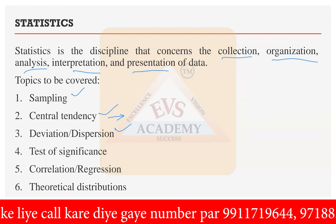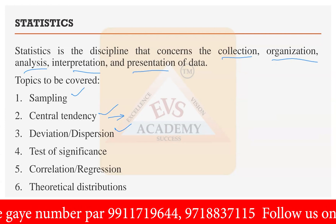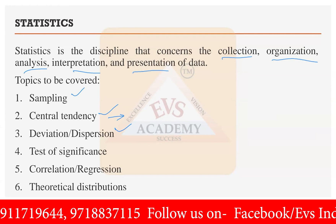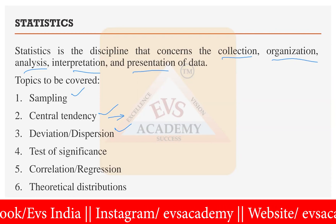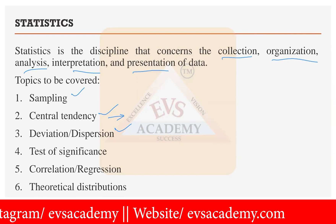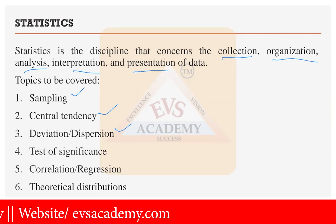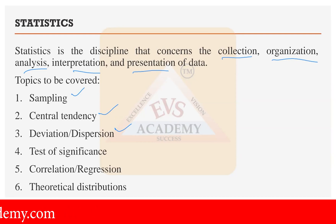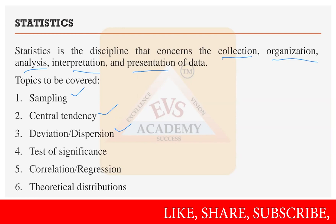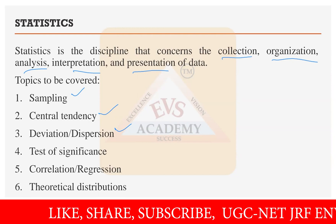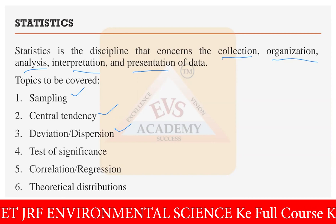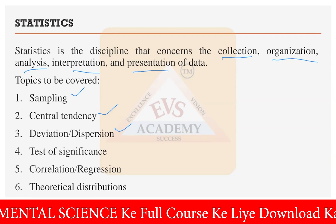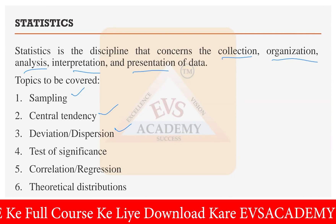Then similarly we have deviation and dispersion. How your data is dispersed, how your data is deviated, or how far your data is from the central tendency value — that is the mean, median, or mode value. If your data are very far from the middle value, you would say your data has high deviation, high dispersion. If your data are concentrated near the middle values, then your data has very less dispersion or very less deviation.